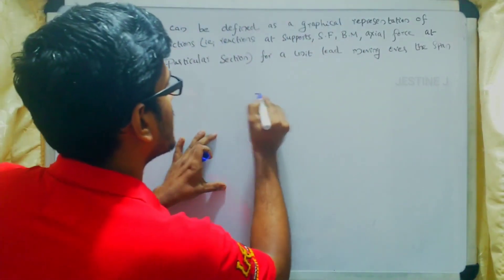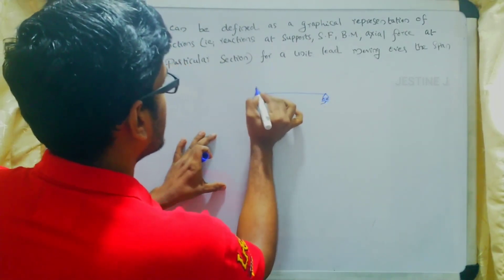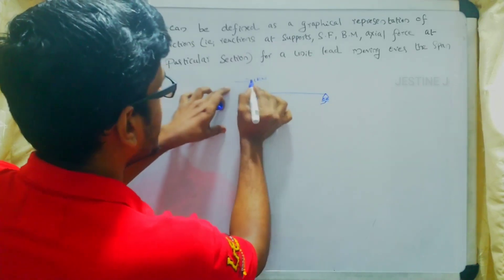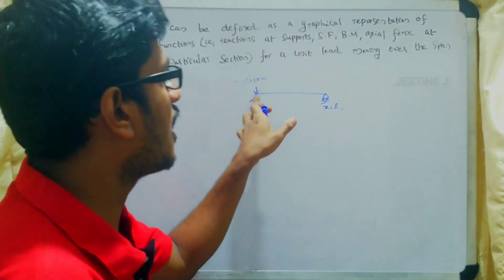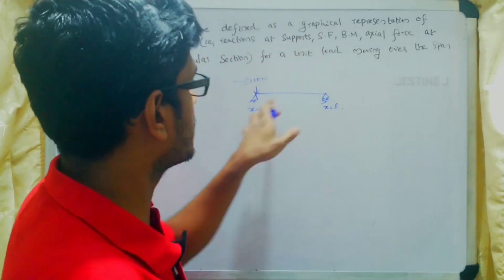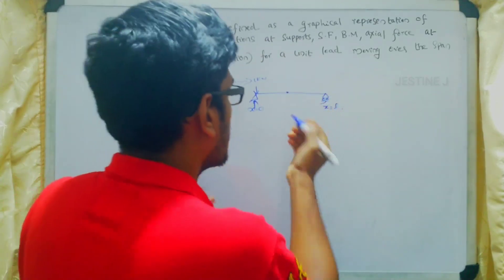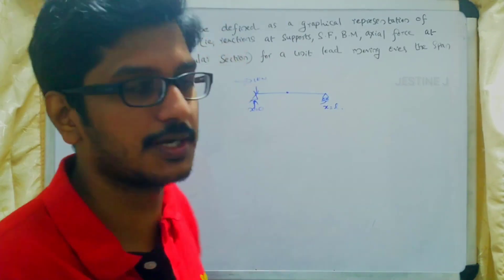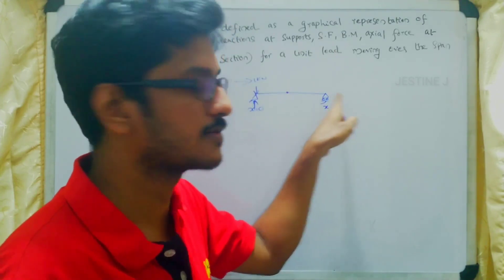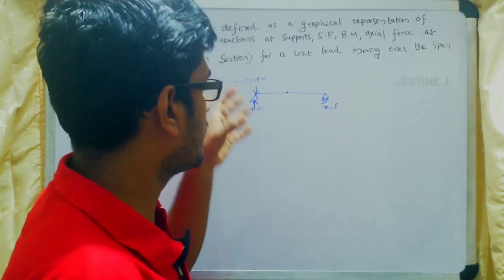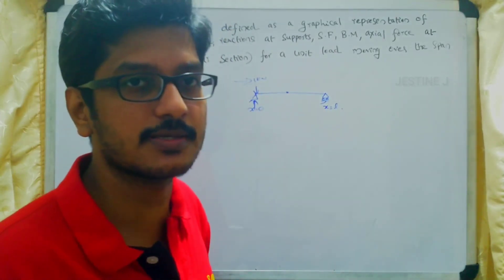From the previous lecture we know that if a beam is given and a unit load is traveling from x equal to 0 to x equal to L, then the variation of the reaction, shear force at any position, or bending moment is represented using the ILD. When this 1 kilonewton load is traveling over the surface, how each point varies will be represented using this ILD.